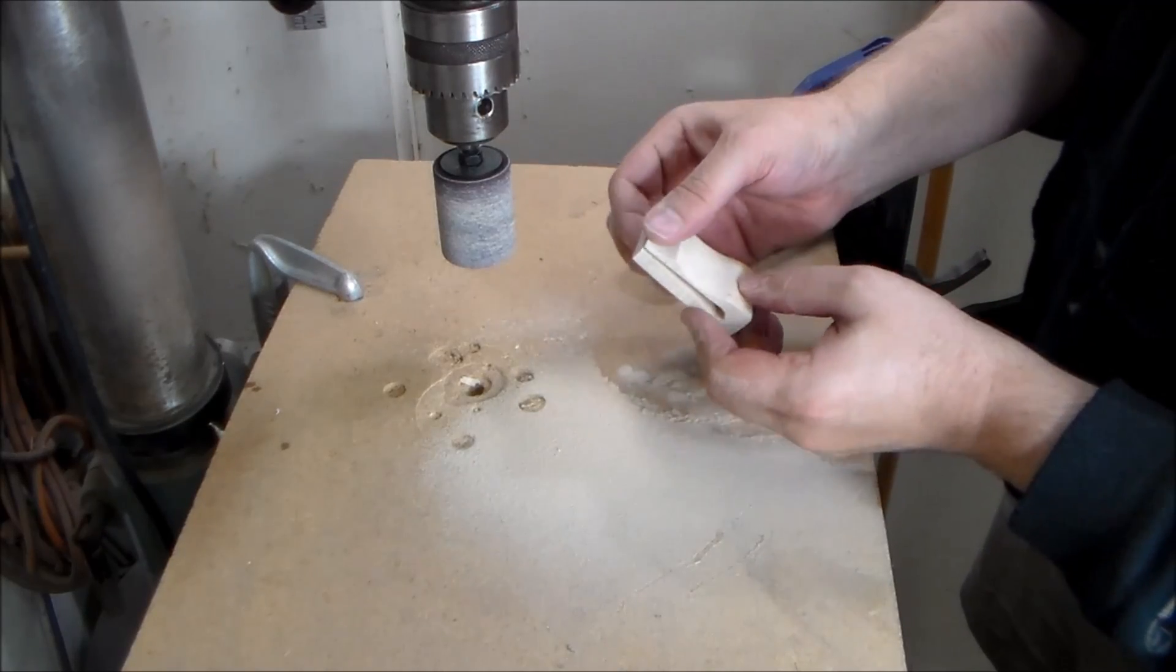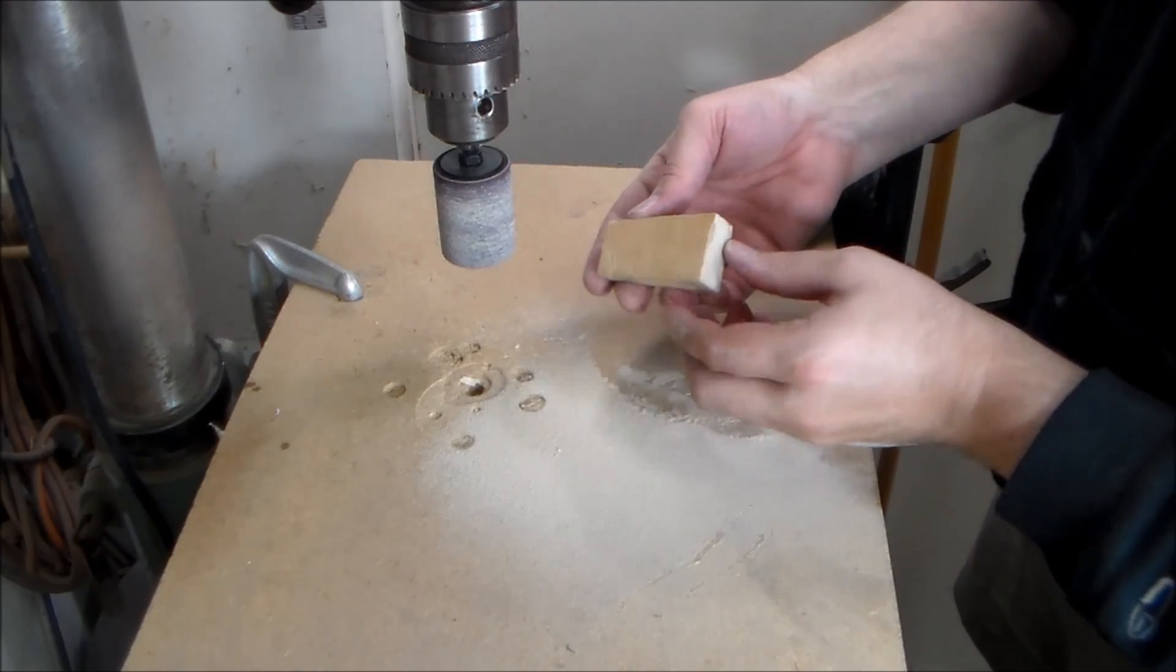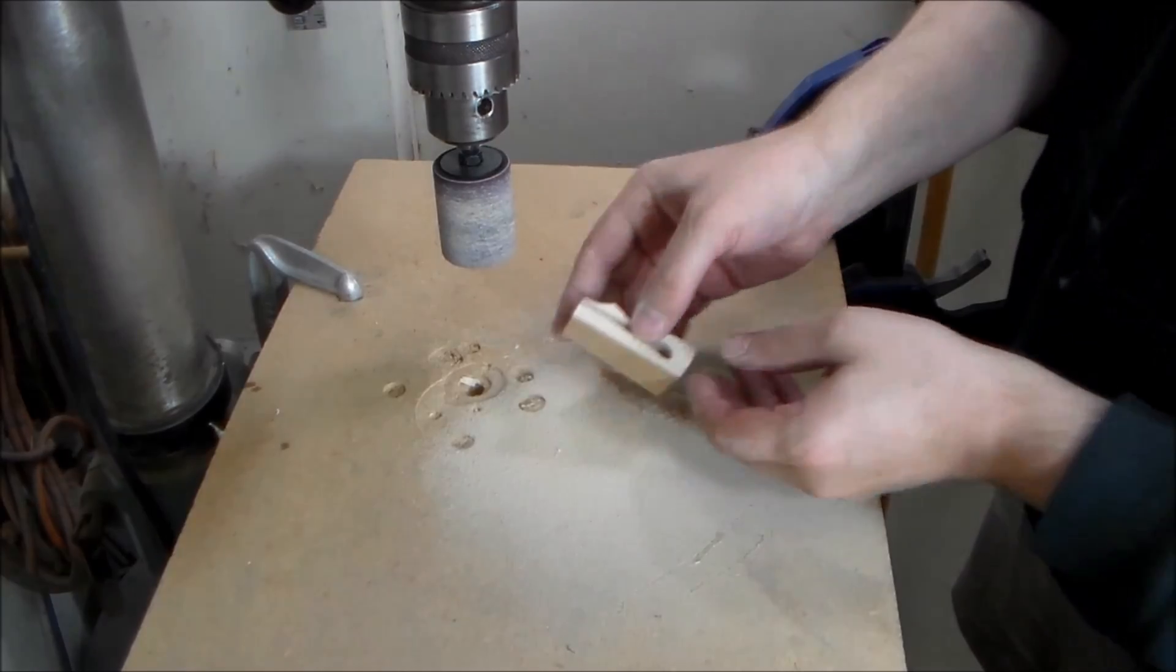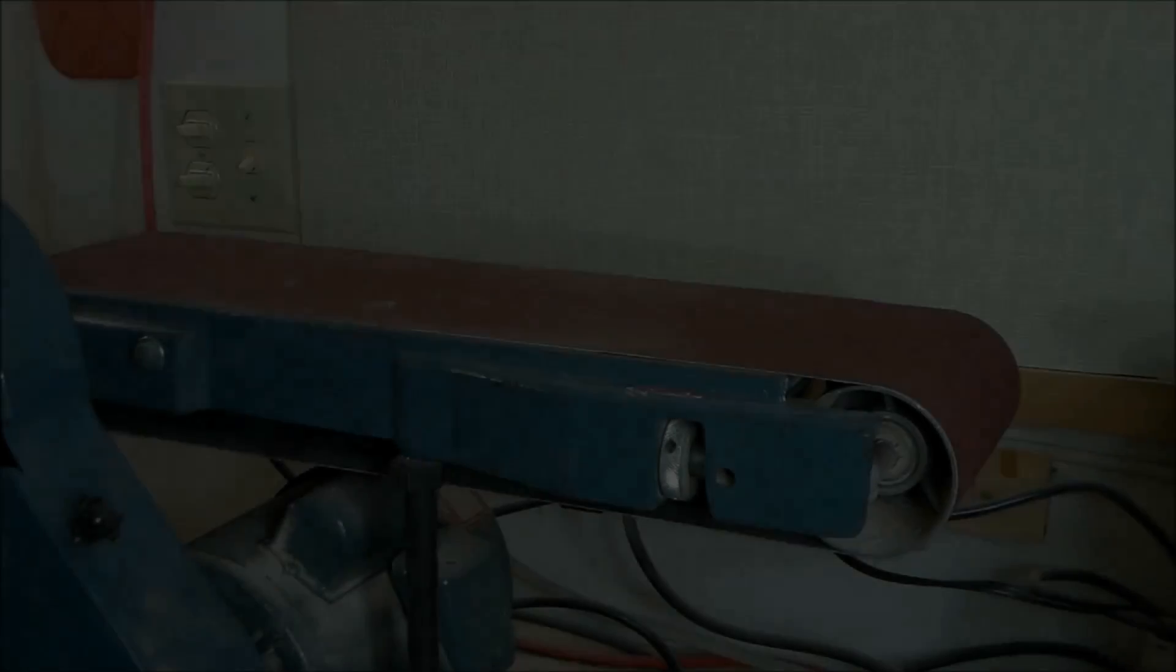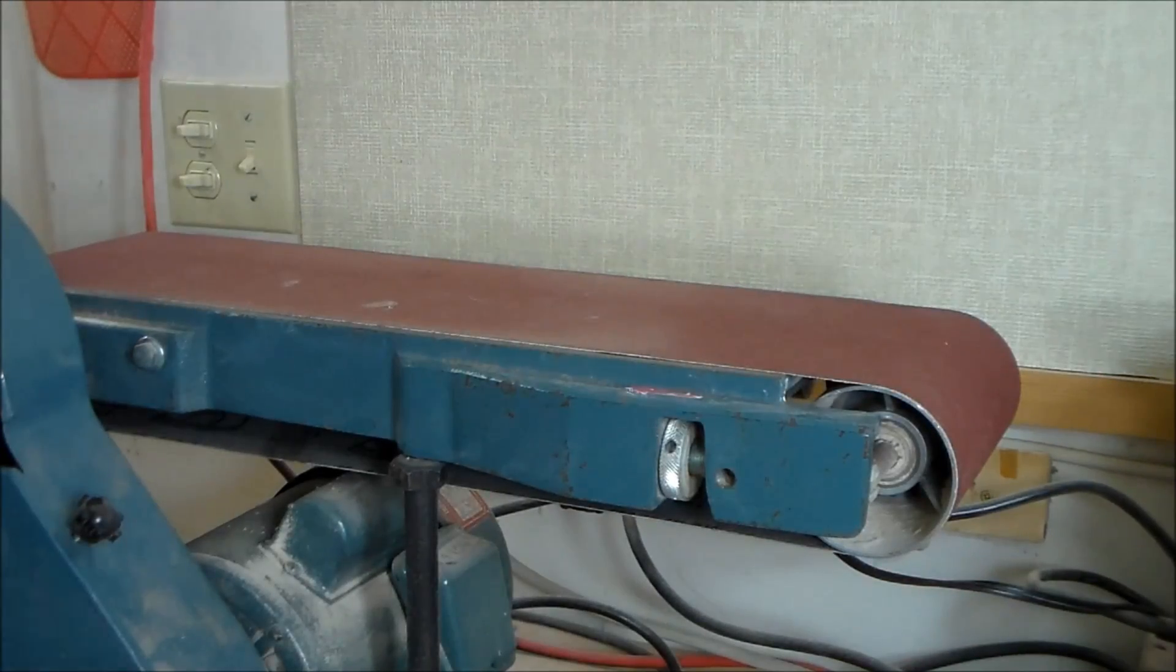But I think that'll be better suited at the 6x48 belt sander. Alright, here we go. This is the part where I either sand this successfully or launch it across the shop at 150 miles an hour.